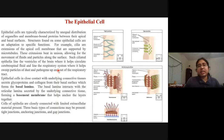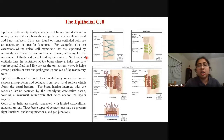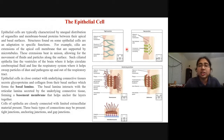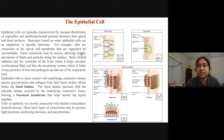Epithelial cells are very important because they have an unequal distribution of organelles and membrane-bound proteins between their apical (top) and basal (bottom) surfaces. The structures found in epithelial cells are adaptations for specific functions. For example, cilia are extensions of the apical surface cell membrane that are supported by microtubules. These different epithelial cell structures not only have different functions but also different structural modules.